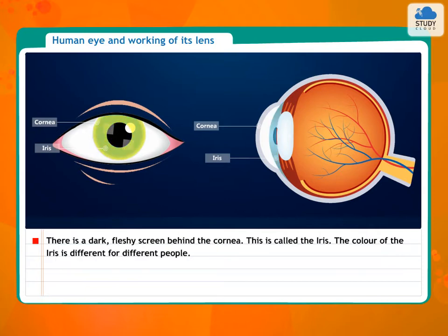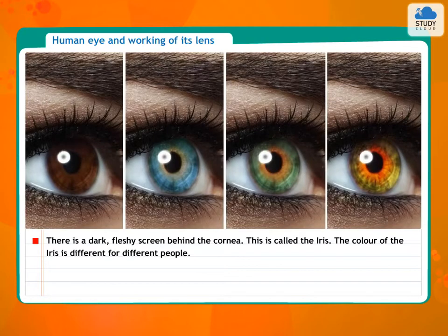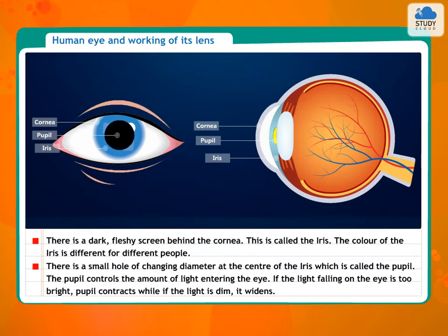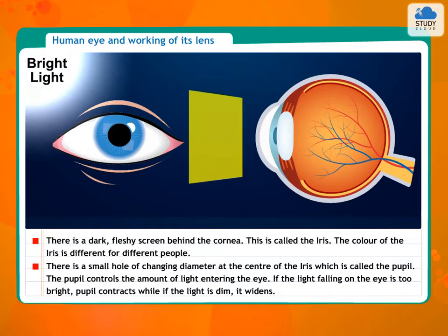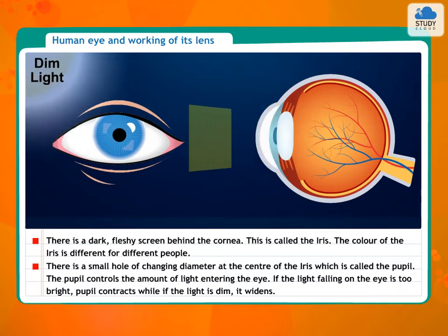There is a dark, fleshy screen behind the cornea. This is called the iris. The color of the iris is different for different people. There is a small hole of changing diameter at the center of the iris which is called the pupil. The pupil controls the amount of light entering the eye. If the light falling on the eye is too bright, the pupil contracts, while if the light is dim, it widens.